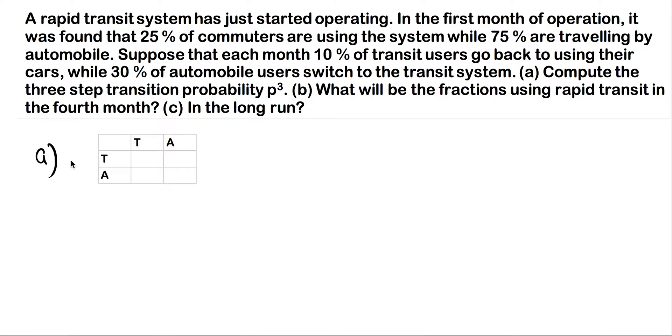So what we're asking for here is P. Essentially all the information is already given to us. Really quick, we're going to call Q, which is the starting vector: 0.25, 75%. Because 25% of the commuters are using the system. We'll call this T, and then 75% are traveling by automobile. That's what I'm calling A.